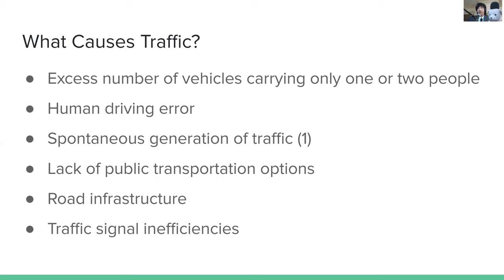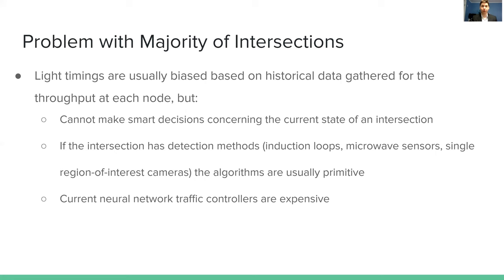Here are some points we theorize cause traffic. Number one is an excess number of vehicles carrying only one or two people — people not carpooling. Numbers two and three go together: human driving error and spontaneous generation of traffic, which means traffic can just appear from a localized source and spread based on the mathematics of traffic flow. The lack of public transportation and road infrastructure are hard to change, but what we're addressing is something we can change — how the traffic signals themselves are controlled.